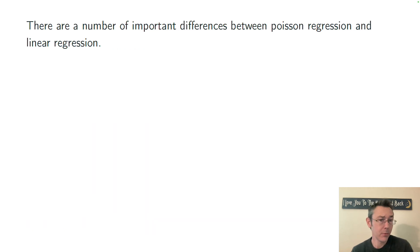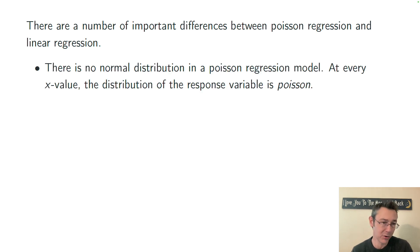There are a number of important differences between Poisson regression and linear regression. As I close this video, I want to point out a few important ones. First of all, there's no normal distribution in a Poisson regression model. At every x value, the distribution of the response variable is Poisson. You're modeling counts here. The whole point is to use that Poisson distribution.